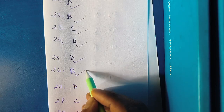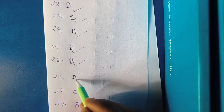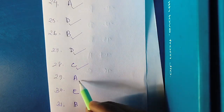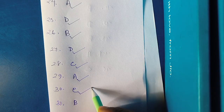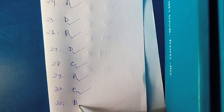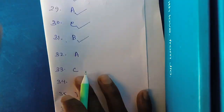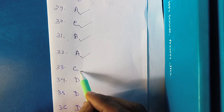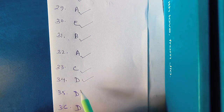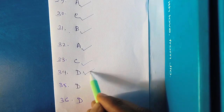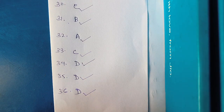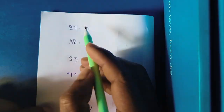40 number right answer option number B. 13 number right answer option number D. 18 number is option number C. 20 number is option number A. 30 number is option number — thirty one, thirty two option number B, 31 option number B. 33 that answer option number C. 35 right answer option number D. 34 option number D. 35 option number D. 36 option number right answer option number D.